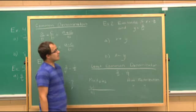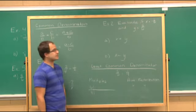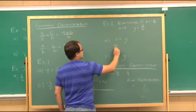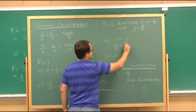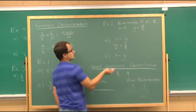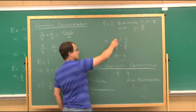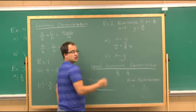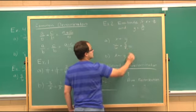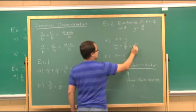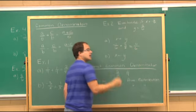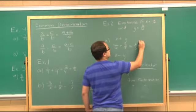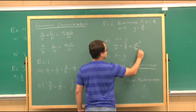Now, evaluate if x is negative one sixth and y is five sixths. First, x plus y: negative 1/6 plus 5/6. You just replace x with negative one sixth and y with five sixths. They have common denominators, so add the numerators: negative one plus five is four, and you keep the same denominator. I notice that four and six are both reducible by two — four divided by two is two.